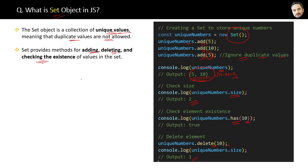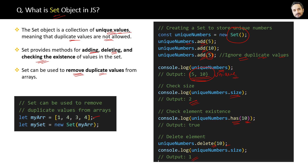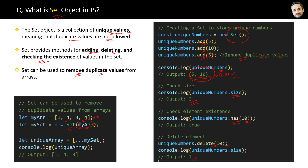You will ask: why do we need a Set when we already have arrays? One use case is that Sets can be used to remove duplicate values from arrays. For example, if you have an array with duplicate elements, you can pass this array as a parameter into a Set, and a new Set will be created with the elements of the array — but it will ignore the duplicate elements.